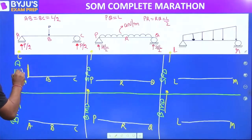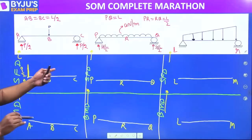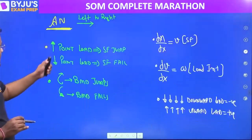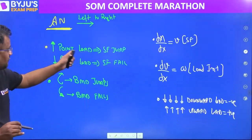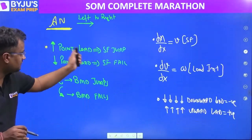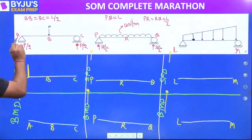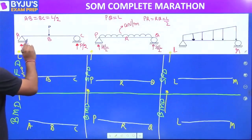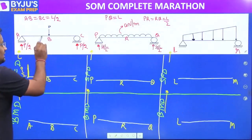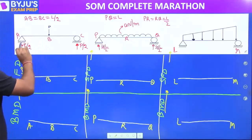Let me repeat again. Upper right point load — shear force jumps. Shear force jumps by P/2 at the upper point load. From A to B there is no load; load intensity from A to B is zero.